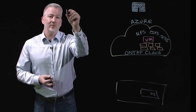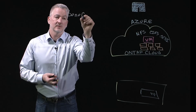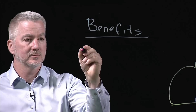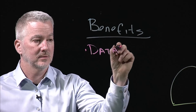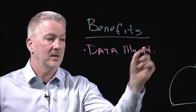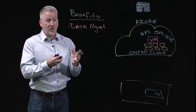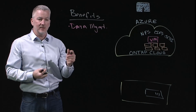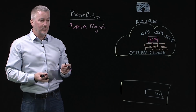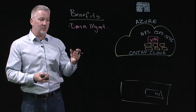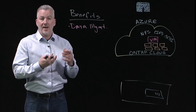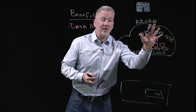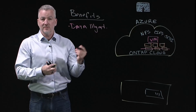One of the main benefits is data management. This includes data protection and snapshots for instant point-in-time recovery points for your data. It also includes storage efficiencies — thin provisioning, data deduplication, compression, compaction, FlexClones, and more — to reduce the underlying capacity you require. You can manage the same amount of data with less resources, which saves you money.